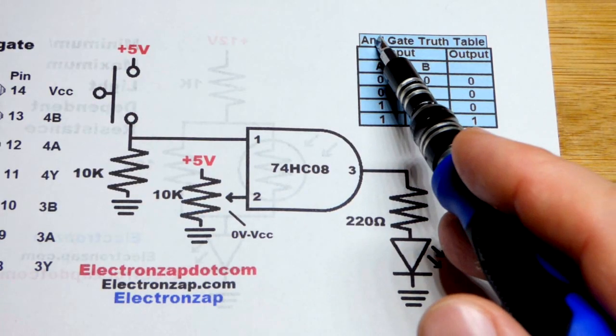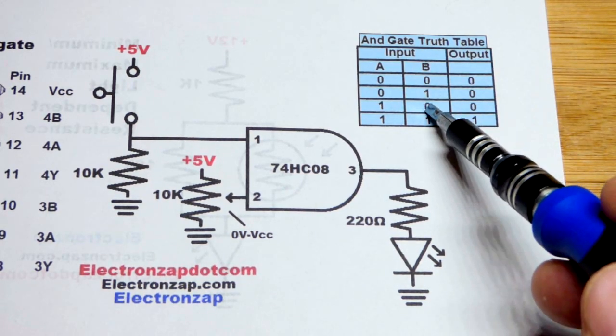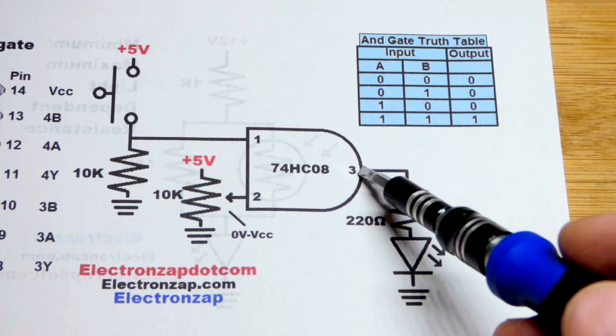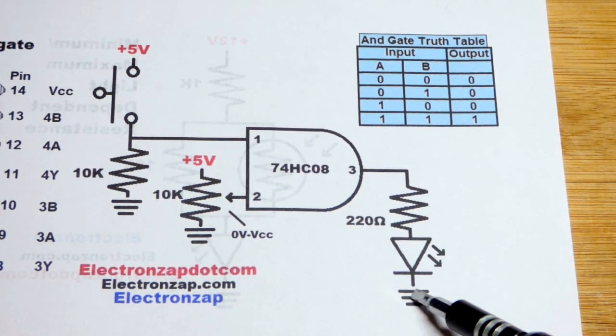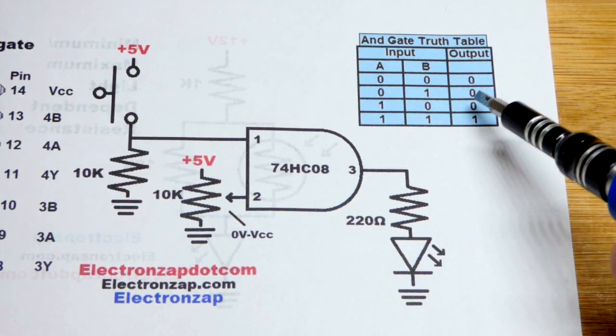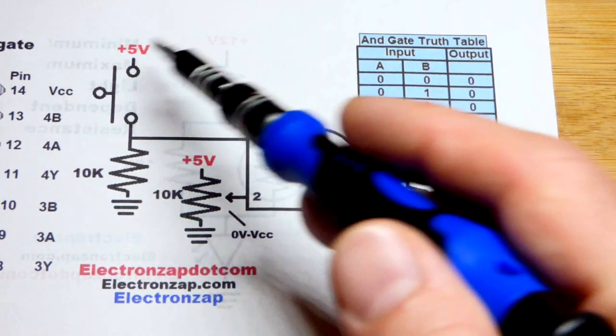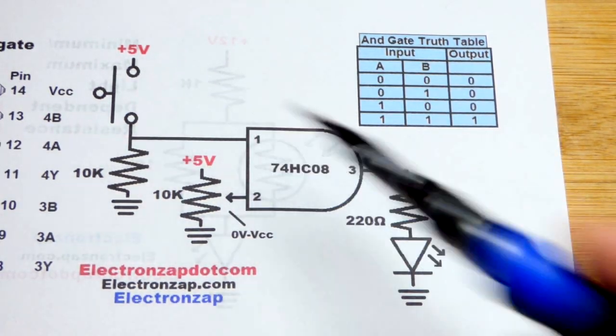The basic property of the AND gate as told by the truth table is that if any or all inputs are low, then the output will be low. The output is digital, so that means it'll either be connected to ground, 0 volts, that's when it's low, or as close to the positive supply as it can get and that's 1, so as close to 5 volts as it can get.